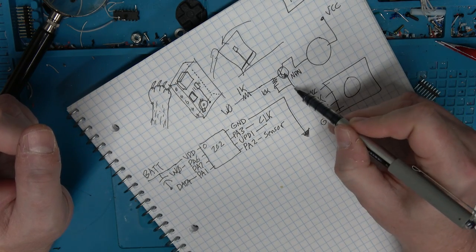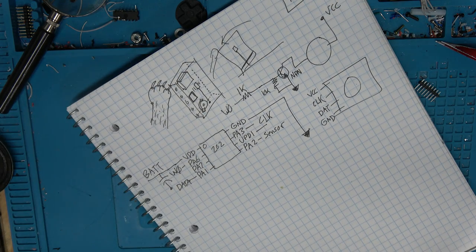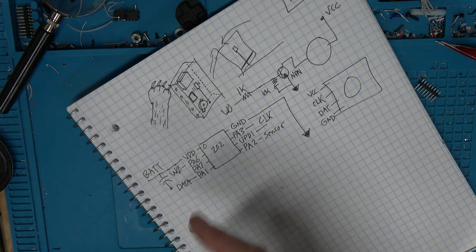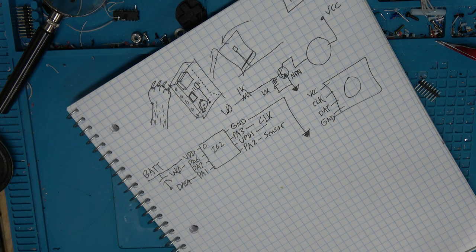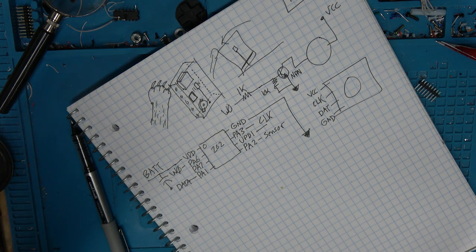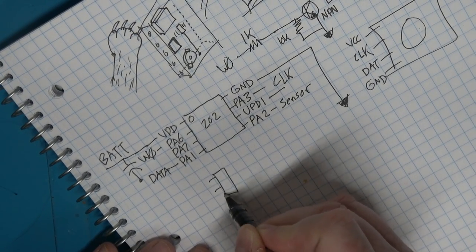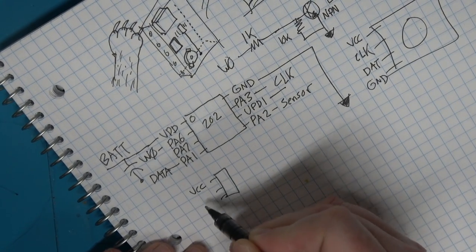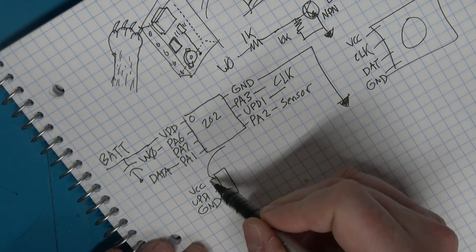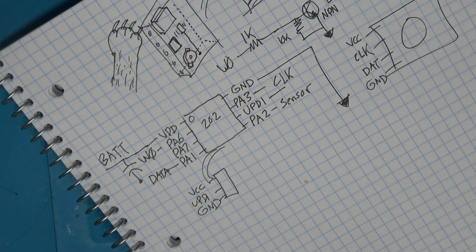So W0 is connected to a timer, so we can create whatever frequency we want to find the best anti-bud frequency. There's also a programming header. That will be VCC, UPDI, and ground.